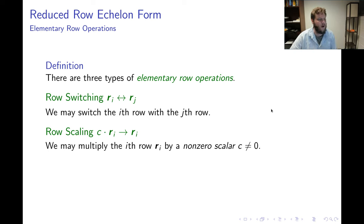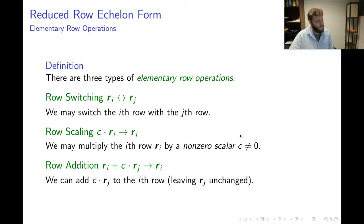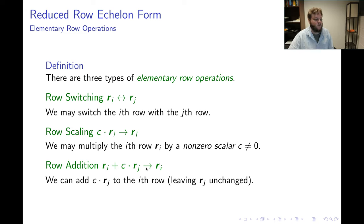Another elementary row operation is called row scaling. The idea is that we can scale the i-th row of any matrix by any nonzero scalar c. The notation for scaling the i-th row by c is: c · r_i → r_i. The third type of elementary row operation is called row addition: I can add any scalar multiple c of row j to the i-th row, written as r_i + c·r_j → r_i.